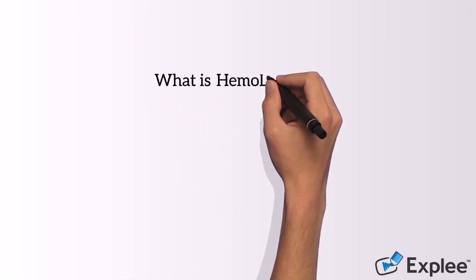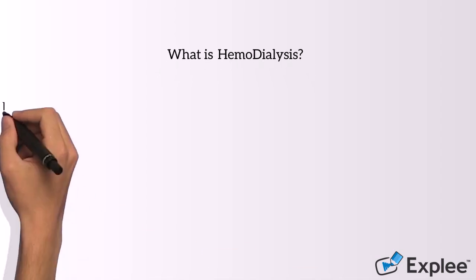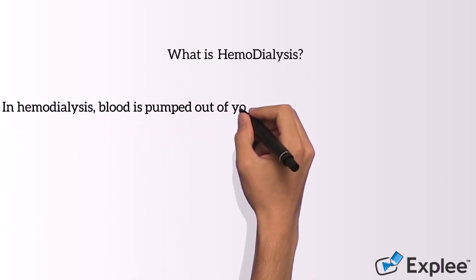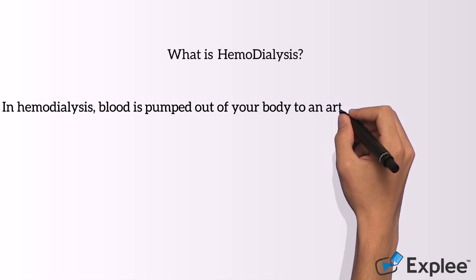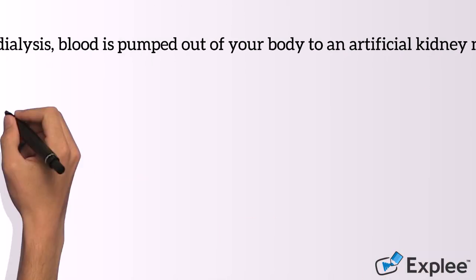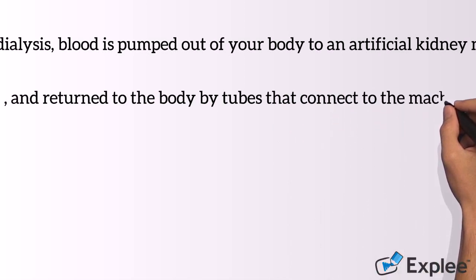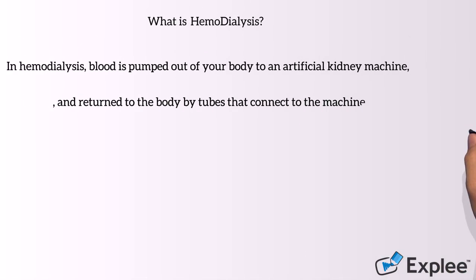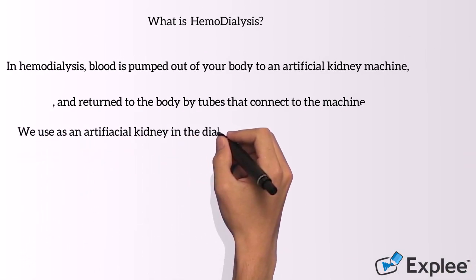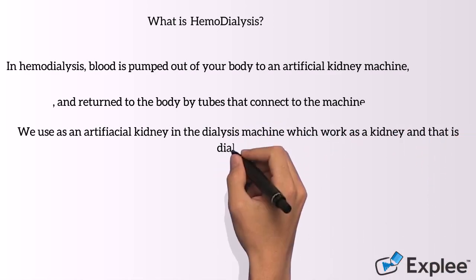What is hemodialysis? In hemodialysis, blood is pumped out of your body to an artificial kidney machine and returned to the body by tubes that connect to the machine. We use an artificial kidney in the dialysis machine which works as a kidney, and that is called a dialyser.